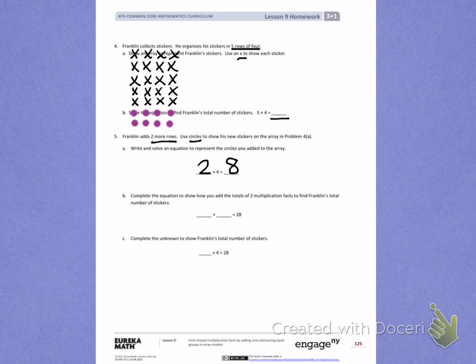Complete the equation to show how you add the two totals of two multiplication facts to find Franklin's total number of stickers. On letter B and number 4, you found the total of X's. I helped you find the total number of circles, which was 8. Here, you can fill in the total number of X's.